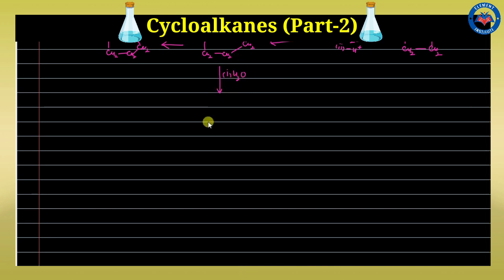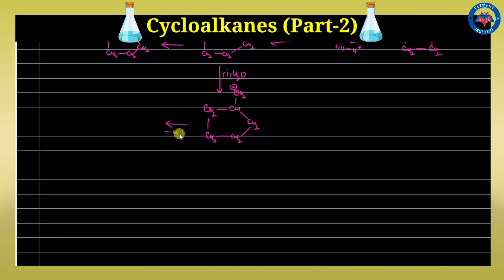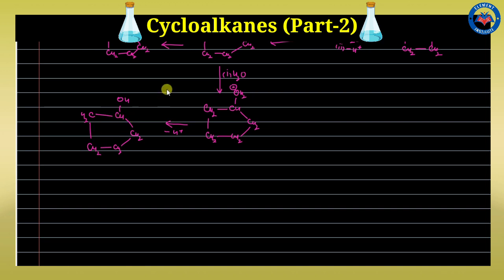If water acts as the nucleophile and adds to the carbocation followed by proton release, we get alcohol formation — specifically cyclopentenol. So this is known as ring expansion — starting from a four-membered ring system and obtaining a five-membered ring product.